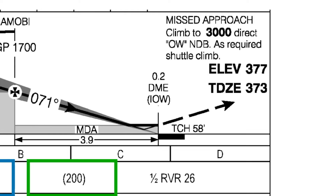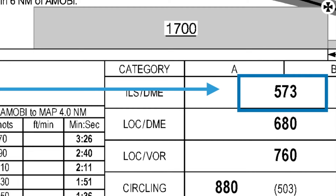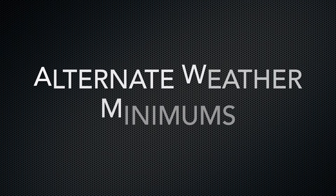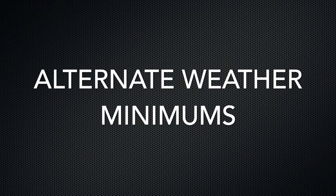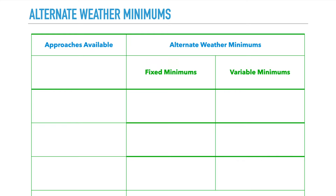In this case, you can see the touchdown zone elevation is 373 feet. If you add that to the 200 feet above ground level, that gives you 573 feet, which becomes your height above sea level. Now let's get right into the alternate weather minimums — I would commit these numbers to memory. There will be a separate lesson on how to actually use this in a real example, but for now you just have to memorize these numbers.